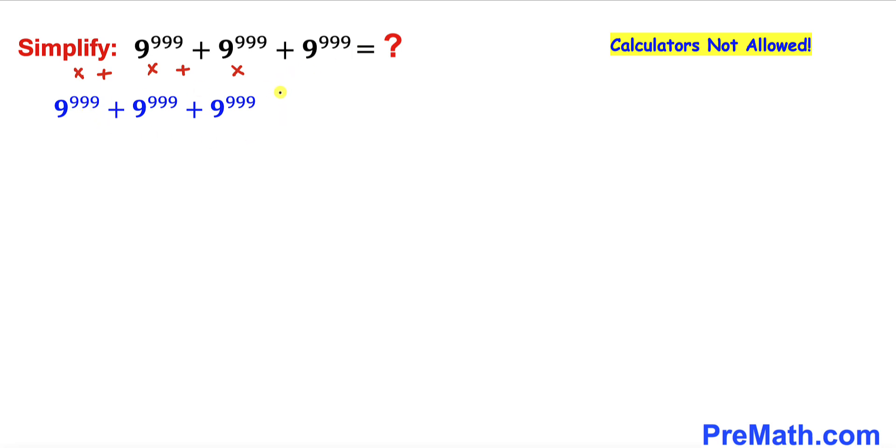Therefore we can write this expression as 3 times 9^999. Now let's focus on this 9^999 and here I have copied it down. Now let's focus on this base 9.